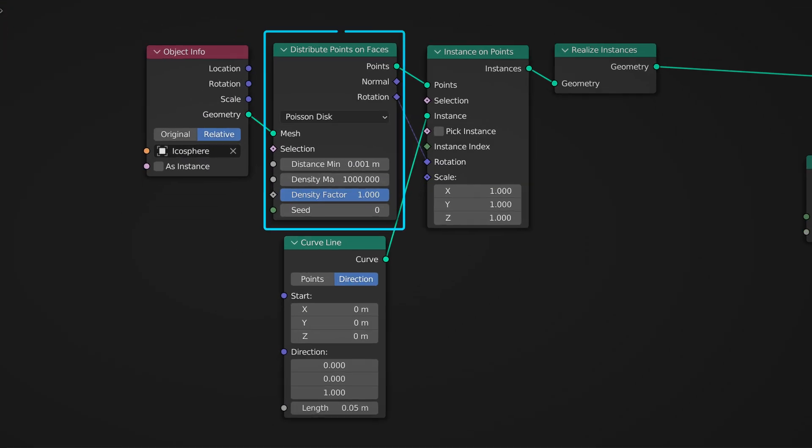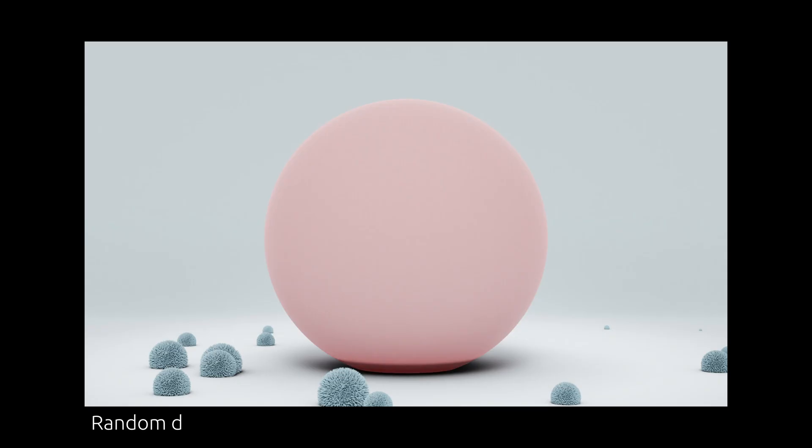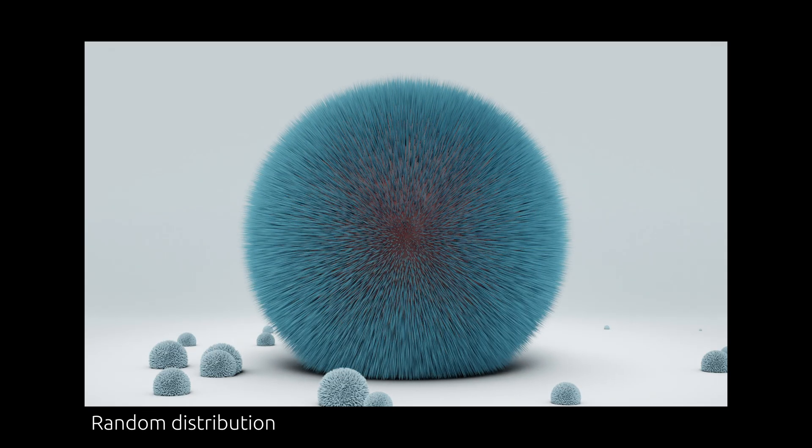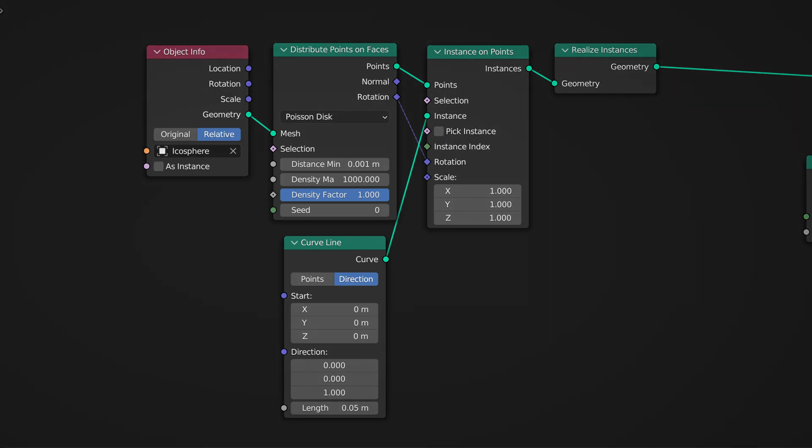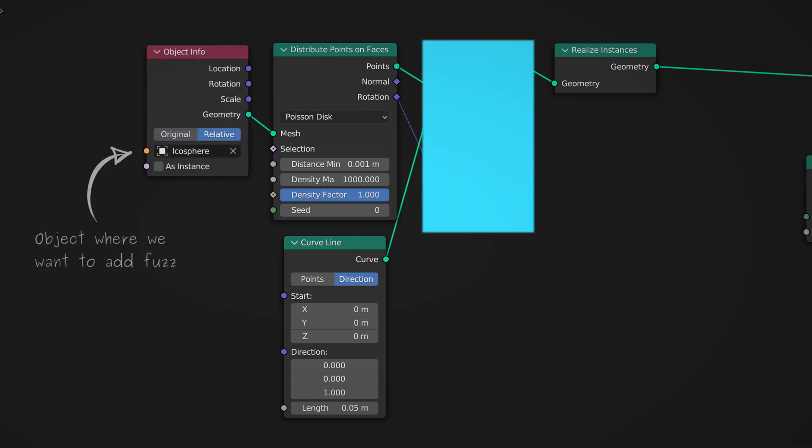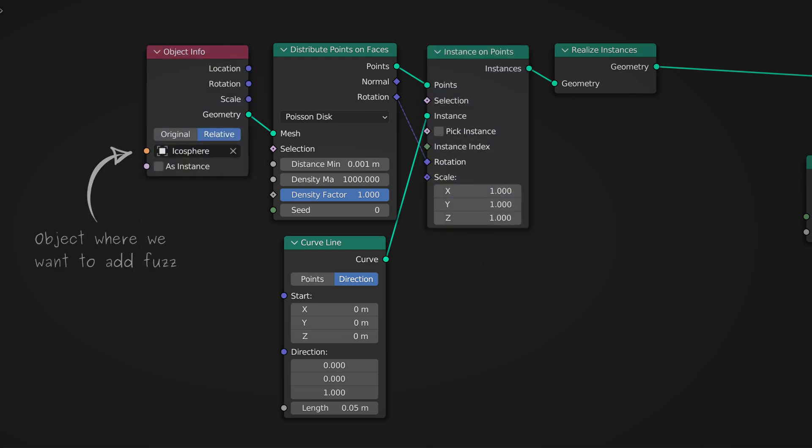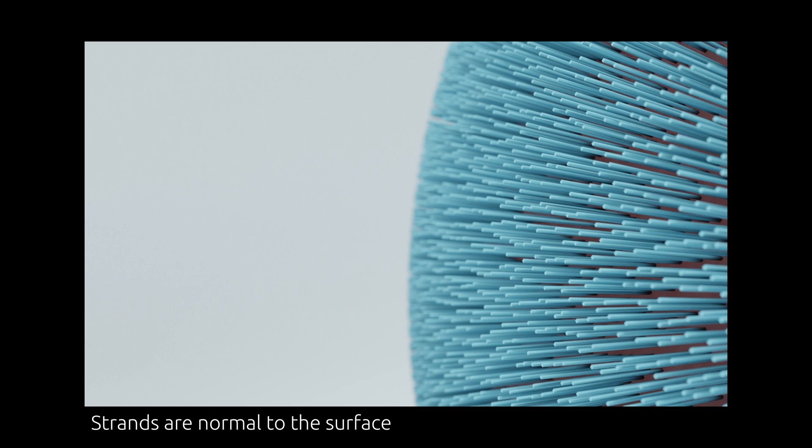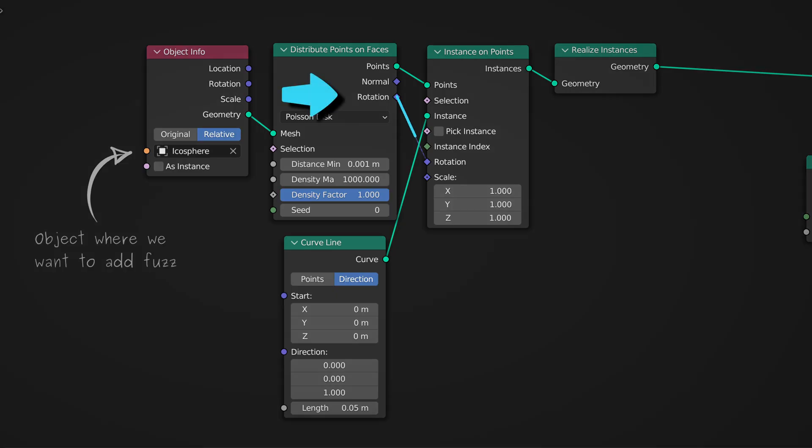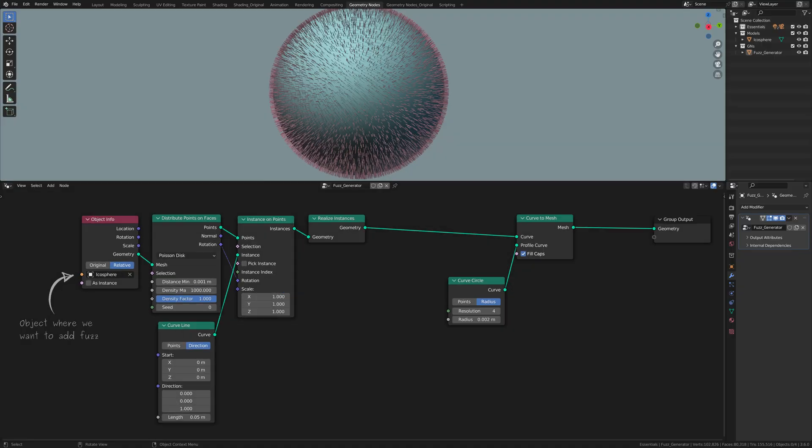The most important node here is the distribute points node, which generates a random distribution of points on the surface of the object given by the object info node. The instance on points node then takes these points and places on each of them a single strand made from a single curve line. This node also makes sure the strands are sticking outward from the surface of the object by using the rotation of the distribute points node.